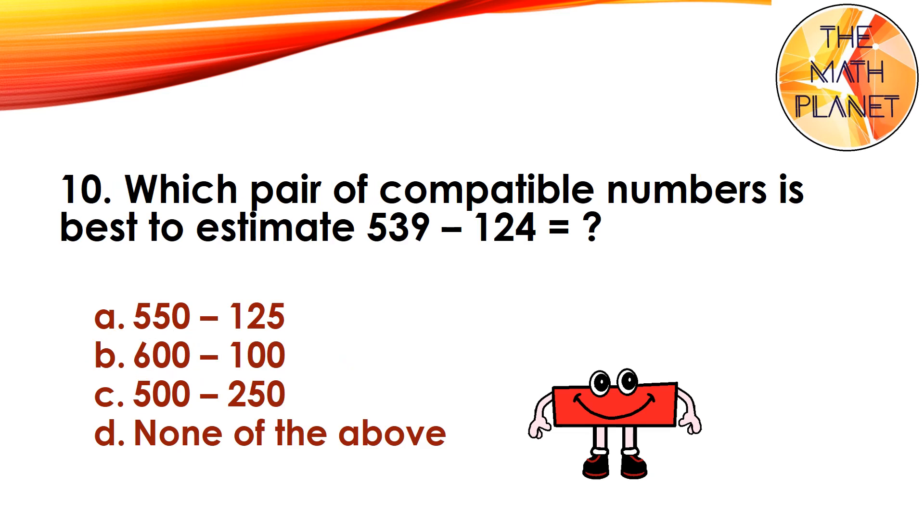Question 10. Which pair of compatible numbers is best to estimate 539 minus 124? The correct answer is A.